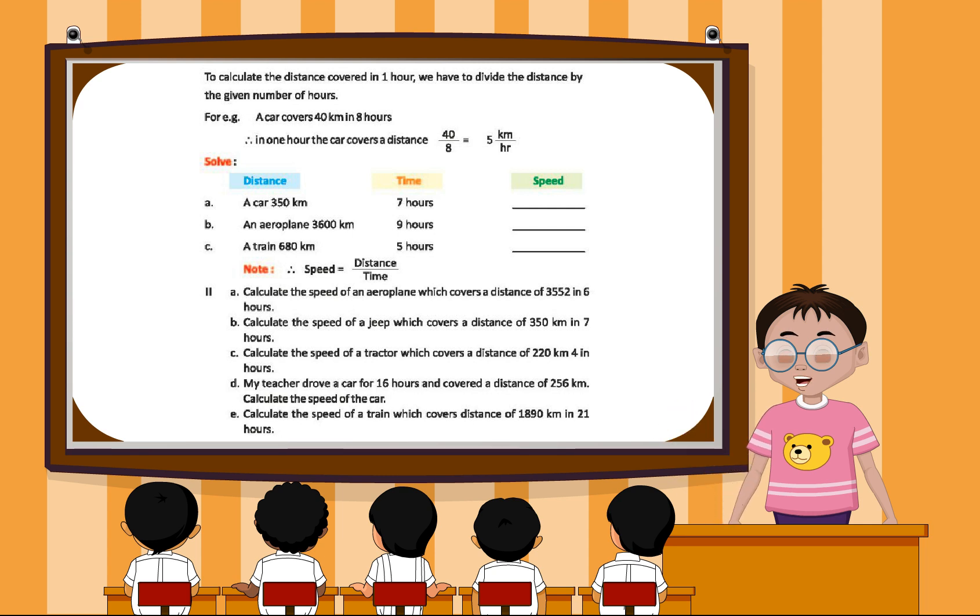Calculate the speed of an aeroplane which covers a distance of 3,552 km in 6 hours. Calculate the speed of a jeep which covers a distance of 350 km in 7 hours. Calculate the speed of a tractor which covers a distance of 220 km in 4 hours.